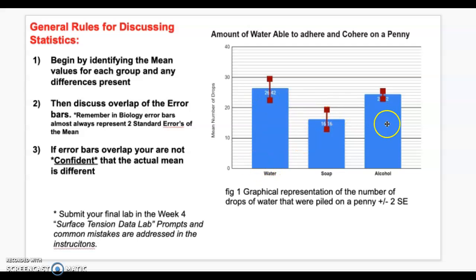So if you were going to write about this experiment, you would begin by describing the difference between the mean values for water, soap, and alcohol. So you would say, water has the highest average mean with this, followed by alcohol and soap.